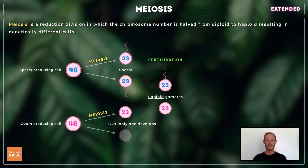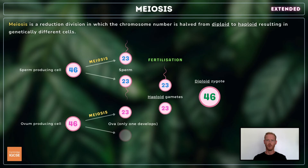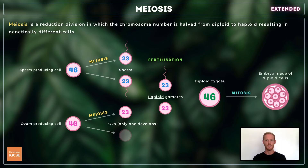In humans, a sperm and egg cell each containing 23 chromosomes fuse during fertilisation to form a diploid cell with a total of 46 chromosomes. Cell division by meiosis therefore prevents the chromosome number from doubling each time an organism reproduces sexually. After fertilisation, the diploid zygote continues to divide by mitosis, meaning the chromosome number in each subsequent daughter cell is maintained.